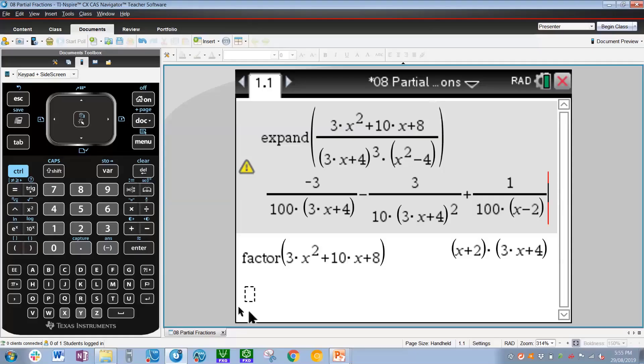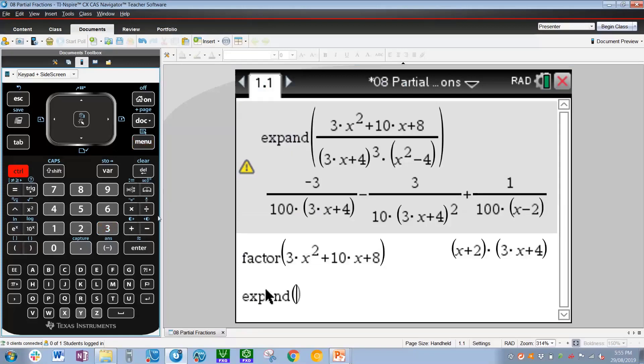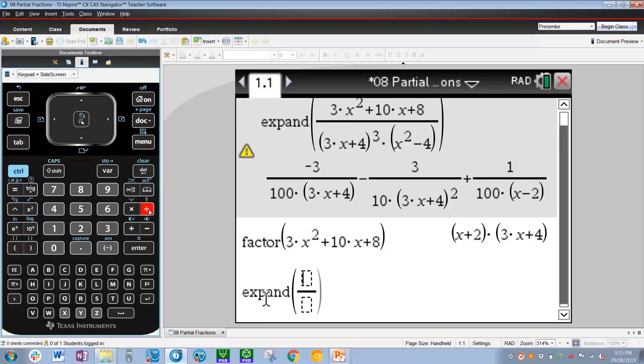Going back to our CAS, let's use expand again: menu 3 for algebra, 3 for expand, control divide, and our question is 3x plus 1 over x multiplied by—now this multiplied by is very important, otherwise the calculator will assume that x is a function, which we do not want it to assume. So x multiplied by x minus 2 close bracket squared.